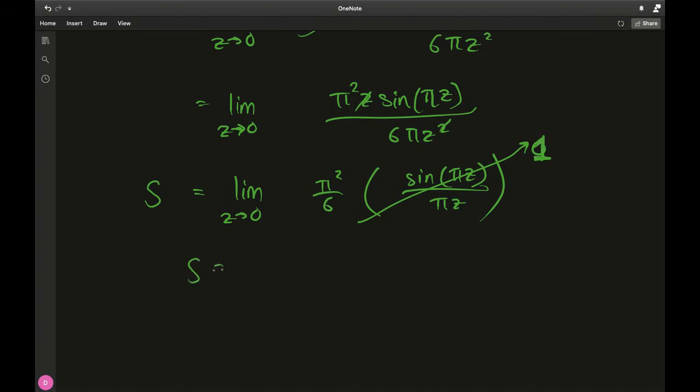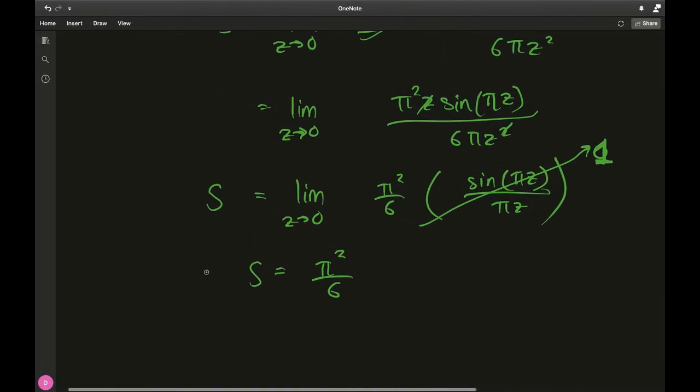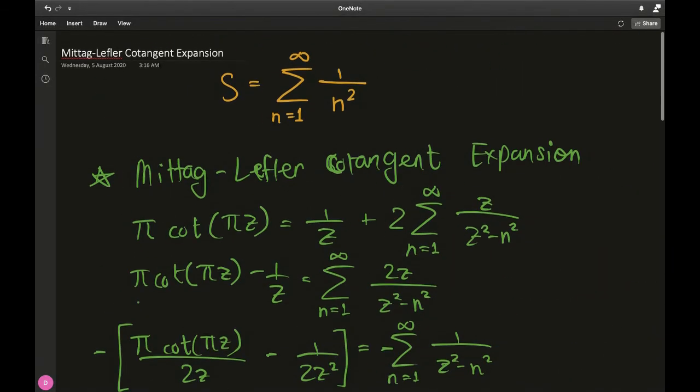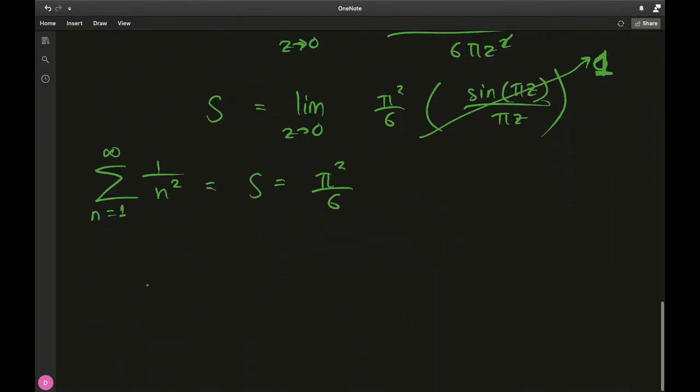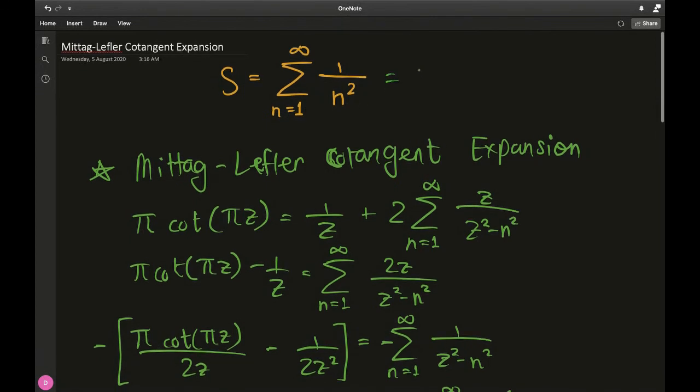So S is nothing but π squared over 6, the remaining factor. And what was S as we defined earlier? Sum from n equal to 1 to infinity of 1 over n squared. There we have it guys, a nice elegant answer for our Basel problem.